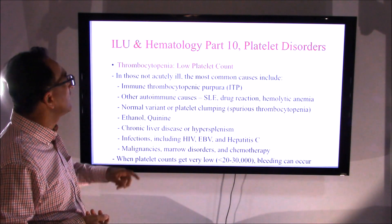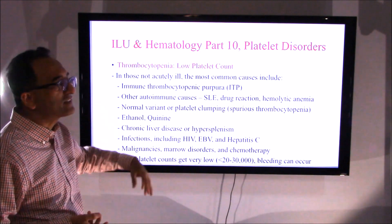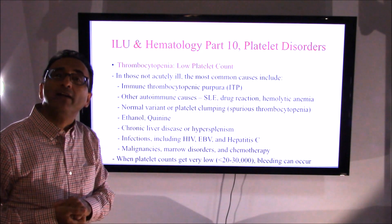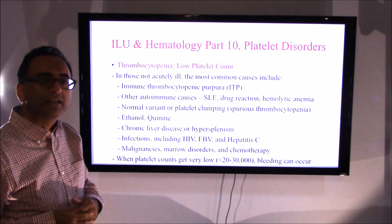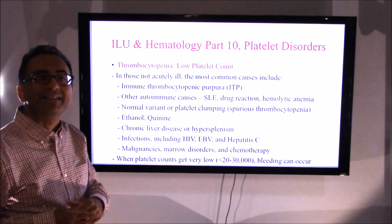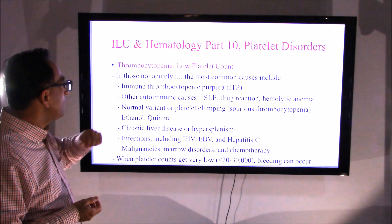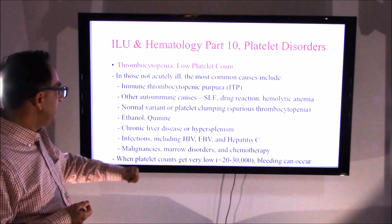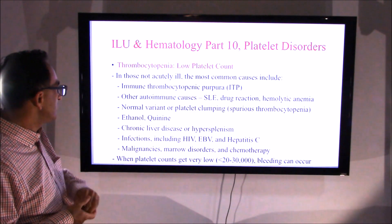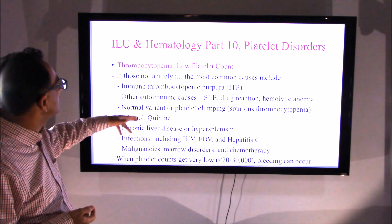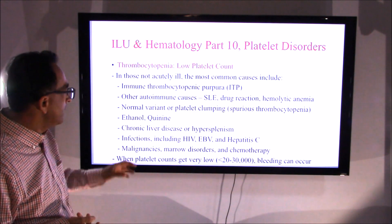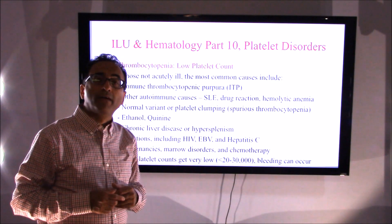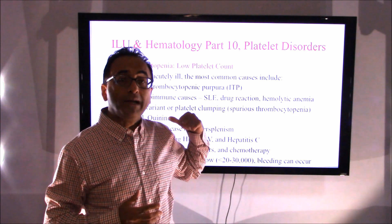If none of these things are present, you should suspect alcohol whether the insured has admitted to it or not, and order appropriate additional requirements. Chronic liver disease, an overactive spleen, HIV infections, hepatitis C, or malignancies can all cause a low platelet count. When it gets very low — like 20,000 to 30,000 — bleeding can occur.